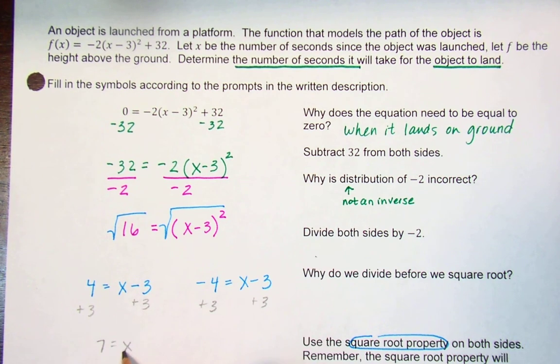So 7 is equal to x, and negative 1 is equal to x. Does that match the intercepts that we see in the diagram? Okay, wait a minute.